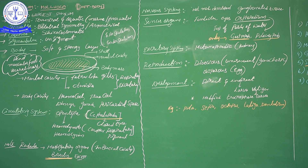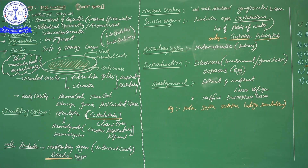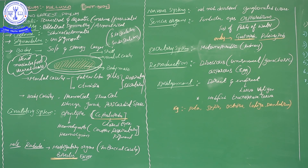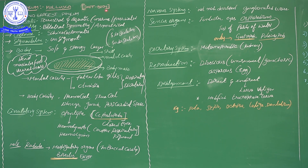Each and every phylum name has one significant characteristic. Before mollusca, we had arthropoda. Why do we keep the name arthropoda? Arthro means a joint and poda means legs — joint-legged organisms. As like that, today's topic is Phylum Mollusca. The name 'mollusca' means soft body. In the animal kingdom, some organisms have a very smooth and soft body, and those organisms are kept under Phylum Mollusca.